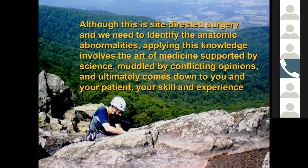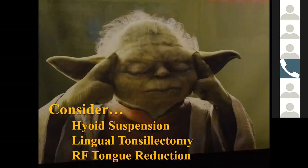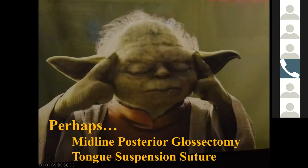Although this is site-directed surgery identifying anatomic abnormalities, applying it involves the art of medicine supported by science, with conflicting opinions. Ultimately it comes down to your experience, skill, and patient factors. Recommended procedures to consider learning: hyoid suspension (start with non-obese patients), lingual tonsillectomy, RF tongue reduction, and potentially midline glossectomy and tongue suspension suture. That concludes the lecture.